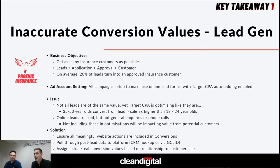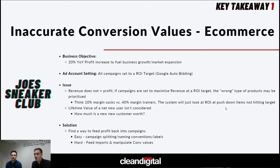You want to be optimizing more towards applications and customers than leads, because there'll be differences in quality at lead stage. Just starting with something — having a lead be worth less than an application, which is worth less than a customer as a conversion value — and then optimizing that value based on real values or a hunch value to begin with is better than just optimizing towards leads. Here's another example for Joe's Sneaker Club for e-commerce, where the business objective is to make profit to pay wages, get stock in, and achieve 20% year-on-year profit growth.